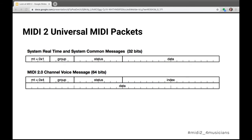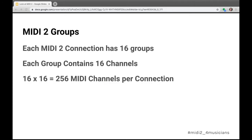One significant improvement comes for free with UMP: the complaint that 16 channels is not enough is addressed. MIDI 2 Universal MIDI Packets have not only channels but also 16 groups. The first four bits of every UMP identify the message type, and the next four bits identify the group. With 16 groups each containing 16 channels, that upgrades us from 16 to 256 potential MIDI channels of data on one physical transport.